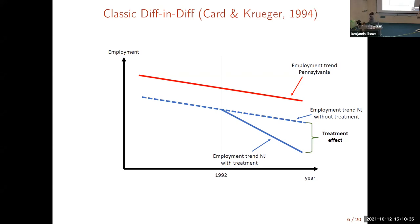Economic theory would tell us that if there is a higher minimum wage, firms hire fewer people because it's more expensive, so employment should go down. The problem is: what do we compare New Jersey with? What they did was, first, they focused on a group of workers with very strong exposure to the minimum wage — workers in fast food restaurants, many of whom earn wages close to the minimum wage. That's the difference-in-differences approach: we need a counterfactual trend. Suppose this is the trend in employment in New Jersey where the minimum wage change happens.